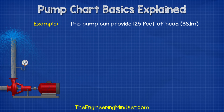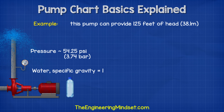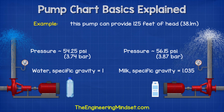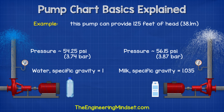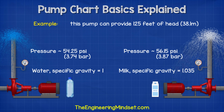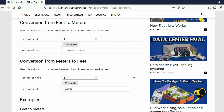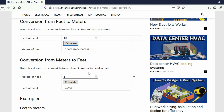For example, we have this pump which can provide 125 feet of head. If we use it to pump water, the pressure will be around 54.25 PSI. But if we were to use it to pump milk, then the pressure will be around 56.15 PSI — and that's purely because of the properties of the two fluids. Conversion between feet and meters of head is very easy; we have a free calculator for that, which you can find links to in the video description below.